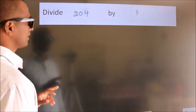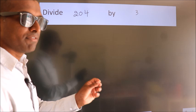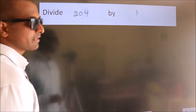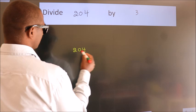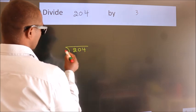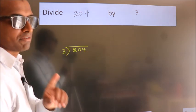Divide 204 by 3. To do this division, we should frame it in this way: 204 here, 3 here. This is step 1.